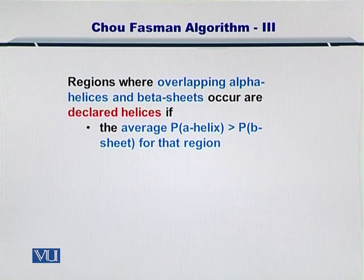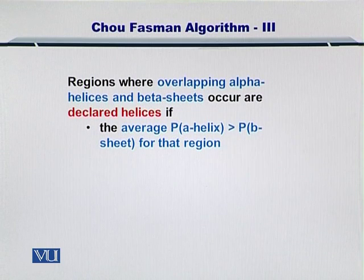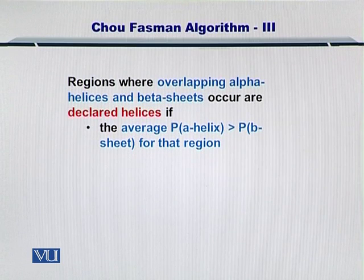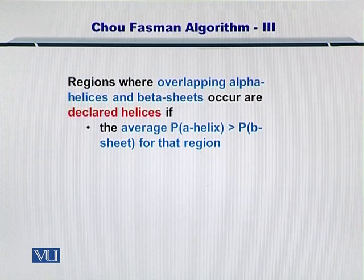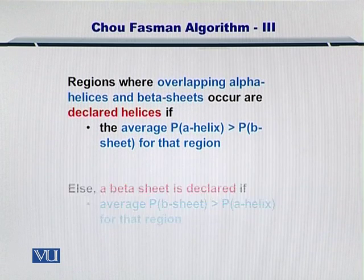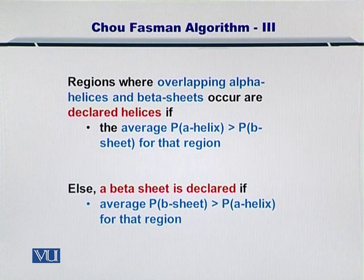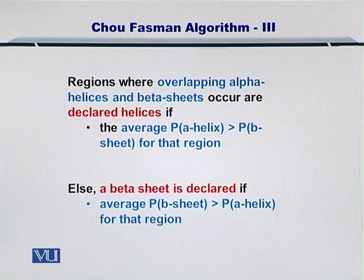There can be cases where the second condition is not met. For regions where you have overlapping alpha helices and beta sheets, you need to compare their overall propensities. If the average propensity for all amino acids to form an alpha helix is greater than the average propensity to form a beta sheet, then an alpha helix is finalized. However, if the reverse is true — that is, the average propensity to make a beta sheet is greater than to form an alpha helix — then a beta sheet is finalized.